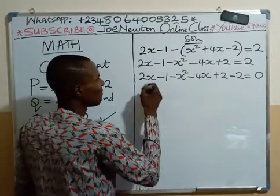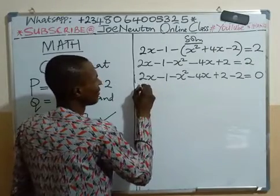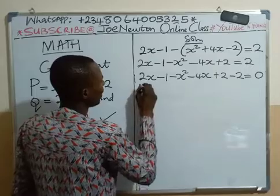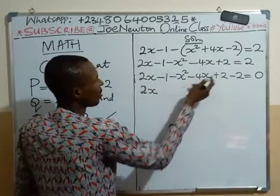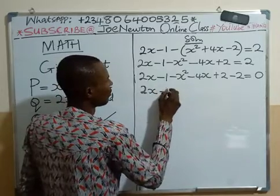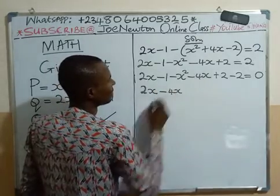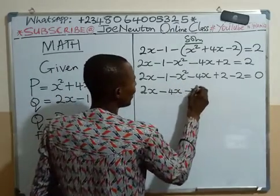Then we will simplify further. We will have like terms here. We have 2x, then minus 4x.